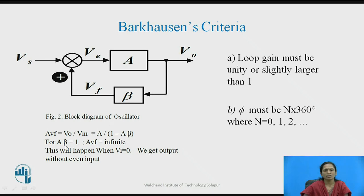But if A*beta equals 1, then 1 minus A*beta becomes 0, and the voltage gain with feedback will become infinite. This will happen when the input signal is absent. We can conclude that we get output without even the application of input signal.